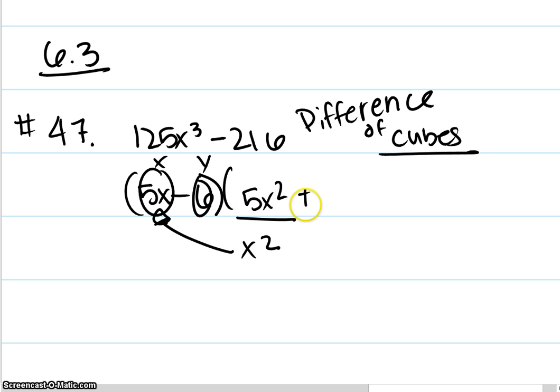Then you add it. This number will be xy. That is these two numbers multiplied together, and that will be 30x.